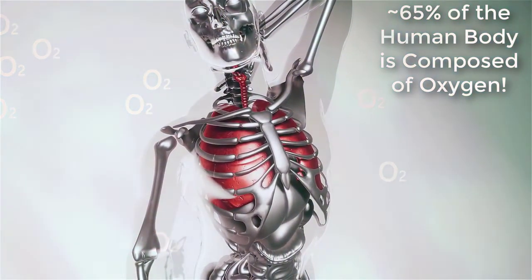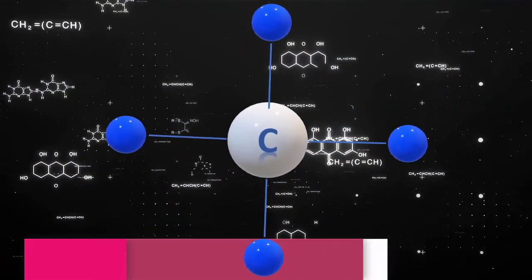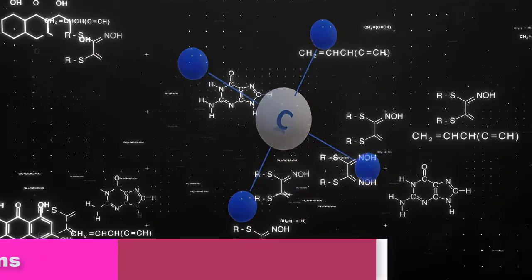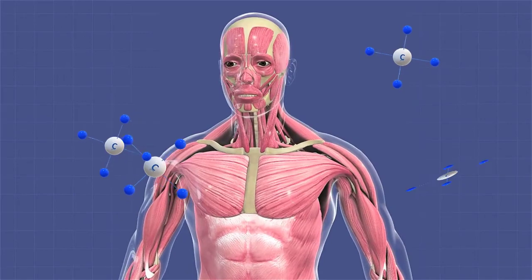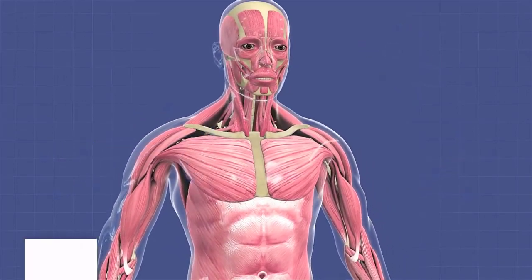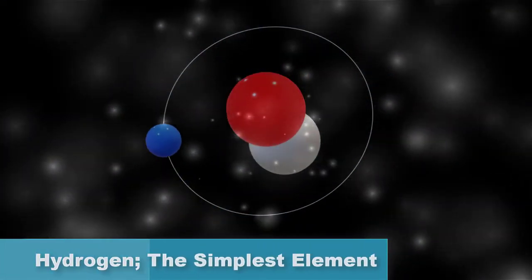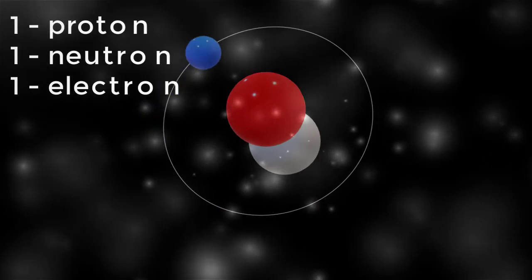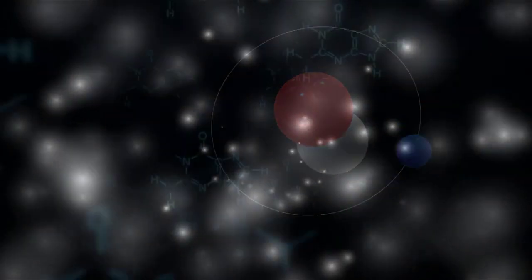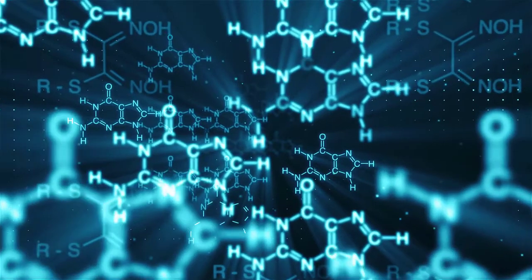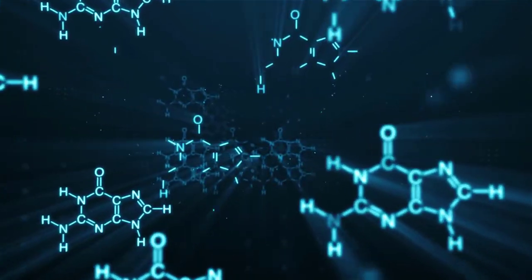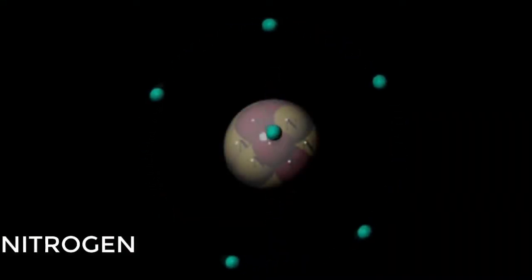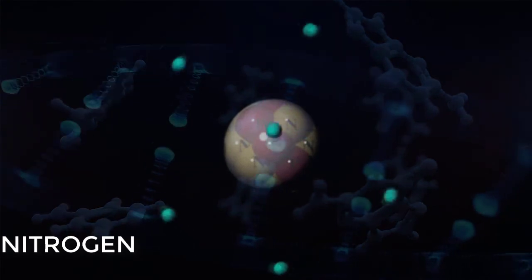Oxygen is the most abundant element in the human body, making up about 65 percent of its mass. Carbon atoms can form up to four strong covalent bonds, making up the backbone of most organic molecules — carbon is the basis for all life on Earth. Hydrogen is the simplest element, containing only a single proton and a single neutron, and readily bonds with other elements. Nitrogen atoms are important components of many proteins and of DNA.